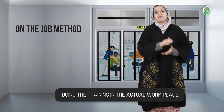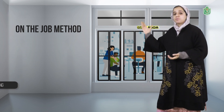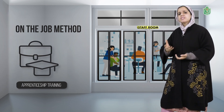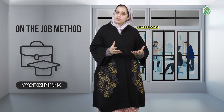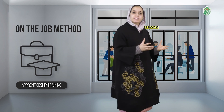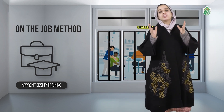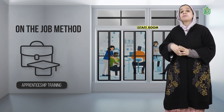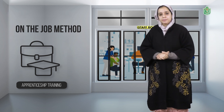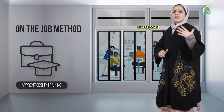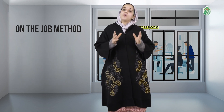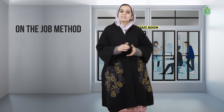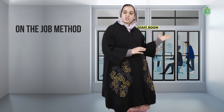The first on-the-job method is apprenticeship training. This is a practical form of training in which the trainee is placed under the supervision and control of an experienced person, acting as an assistant to that person. People who want to join trades like plumbing or electrical work have to undergo such types of training.